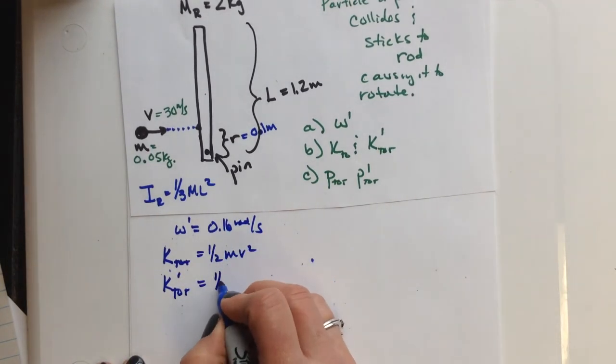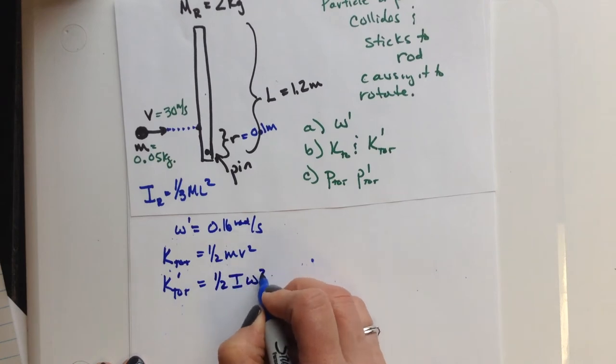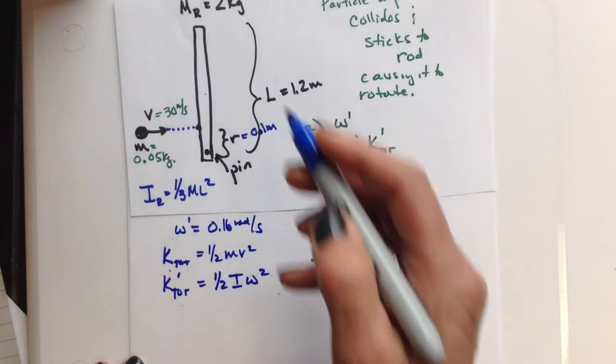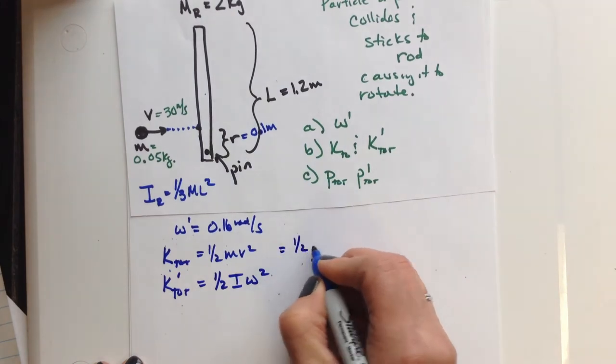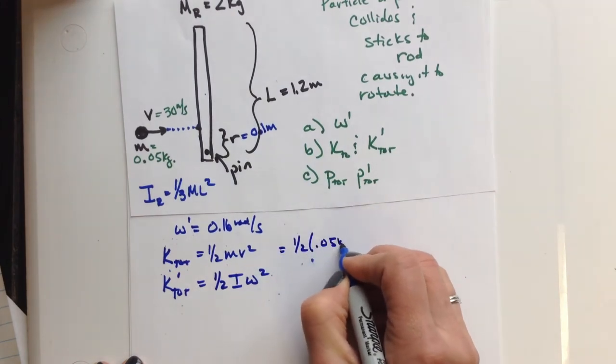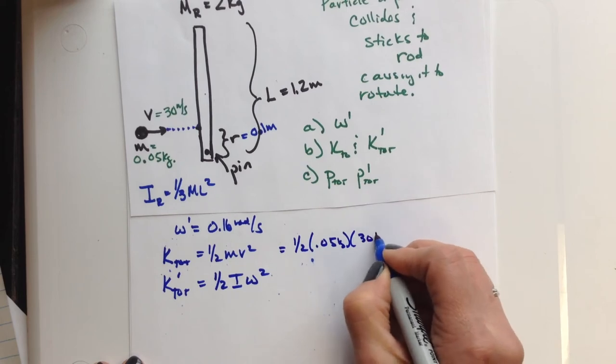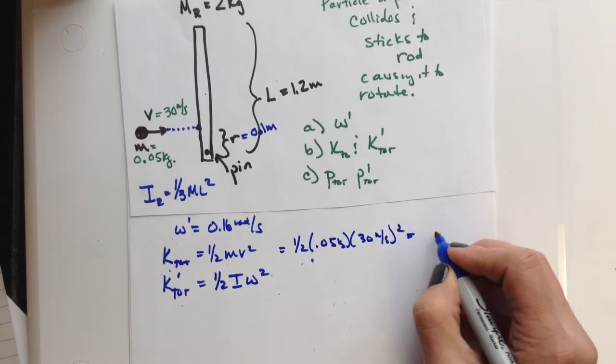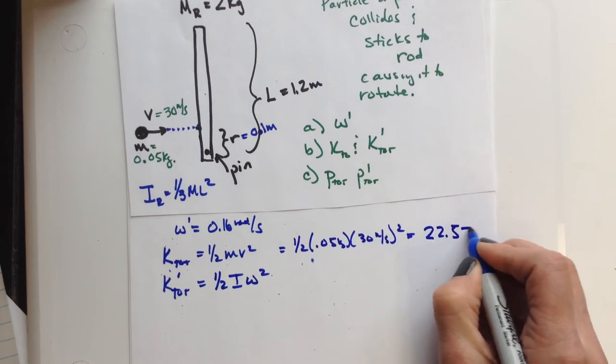Because it's not translating, it's just rotating. So this one, pretty easy enough, we just plug it in, times 30 m per second squared, and we get 22 and a half joules.